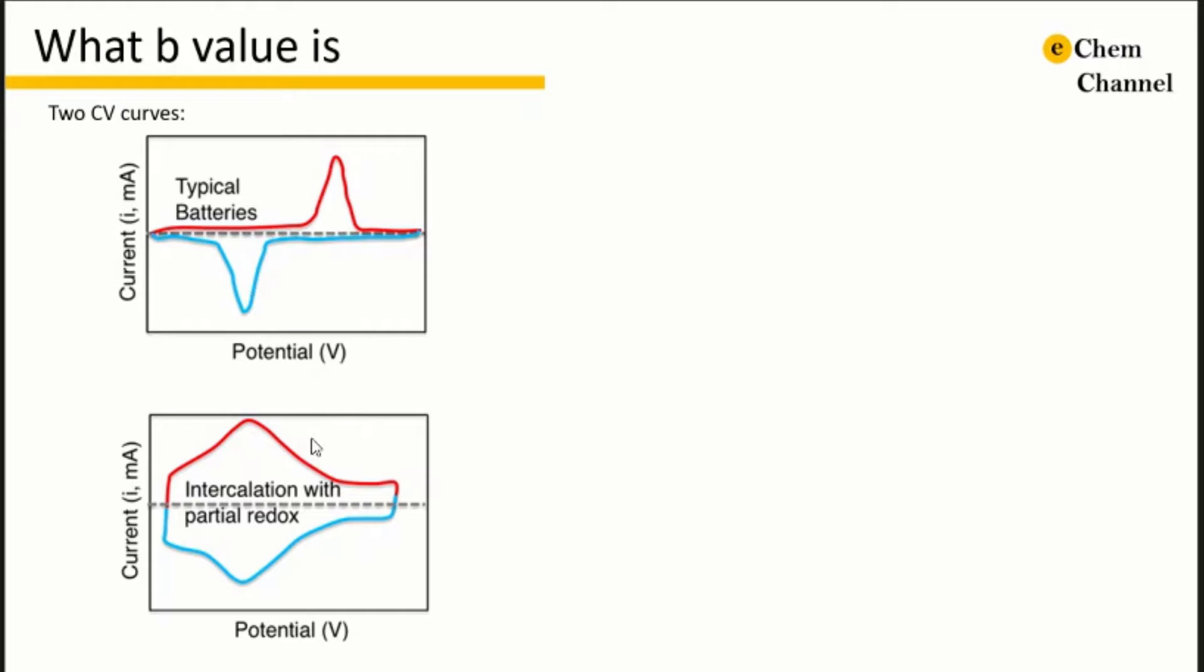Here I'm showing two CV curves. Each has a pair of peaks on the anodic and cathodic branch. From our tutorial one, we can tell the upper curve is more close to a battery type and the bottom one is more close to a pseudo-capacitive type. But are there any more quantitative way to understand the charge storage mechanism? The answer is yes. We can calculate the b value.